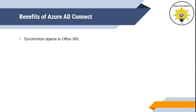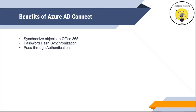The second benefit of Azure AD Connect is password hash synchronization. We can synchronize passwords from Active Directory to Office 365, so that users can use the same password in Office 365 that they use within their on-premise Active Directory network. The next benefit is pass-through authentication. Unlike password hash synchronization where passwords are synced and users are authenticated from Azure Active Directory, pass-through authentication allows users to be authenticated from on-premise Active Directory instead.